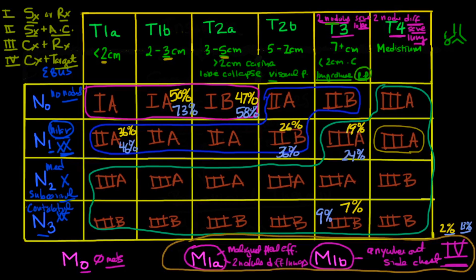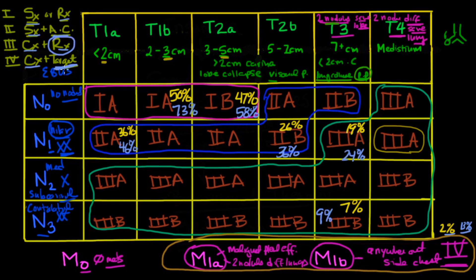To summarize: T, N, and M values combine into an overall Roman numeral stage that determines treatment. Stage 1 gets surgery, or radiation therapy if surgery is not possible, considering how much lung will remain. Stage 2 gets surgery plus adjuvant chemotherapy. Stage 3 gets concurrent chemotherapy and radiation. Stage 4 gets chemotherapy and targeted cellular agents. Note that radiation therapy as a primary treatment applies to stage 3; for stages 1 and 2, radiation substitutes only when surgery cannot be performed.